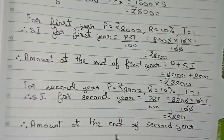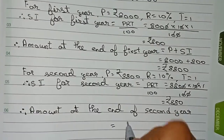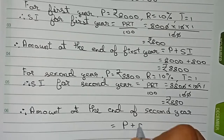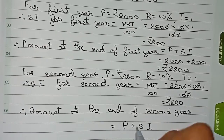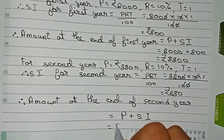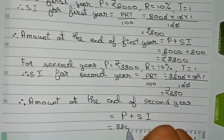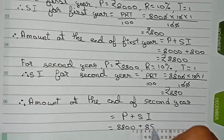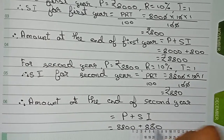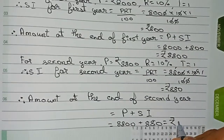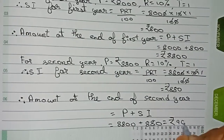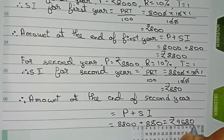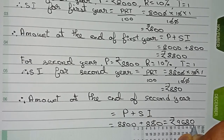The amount at the end of the second year equals principal plus SI, that is 8,800 plus 880, which becomes rupees 9,680. This is the amount at the end of the second year.